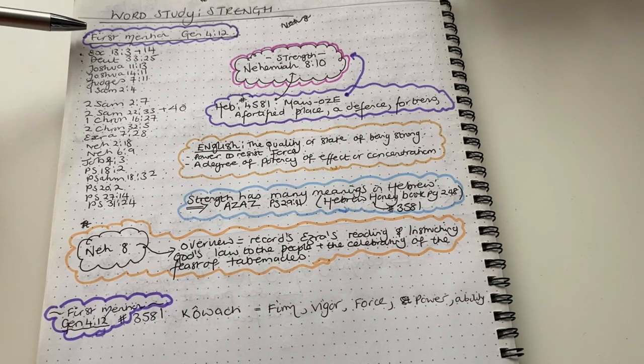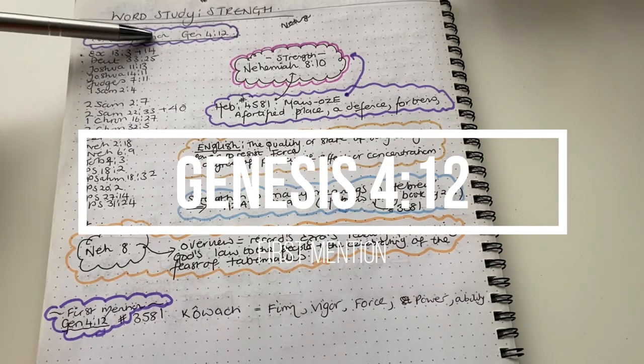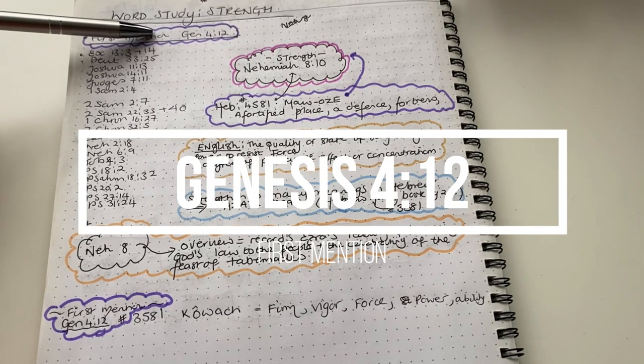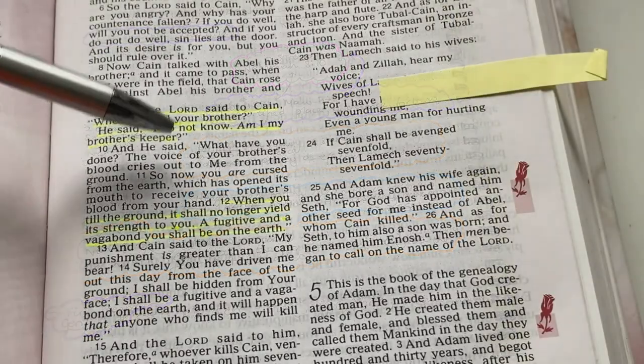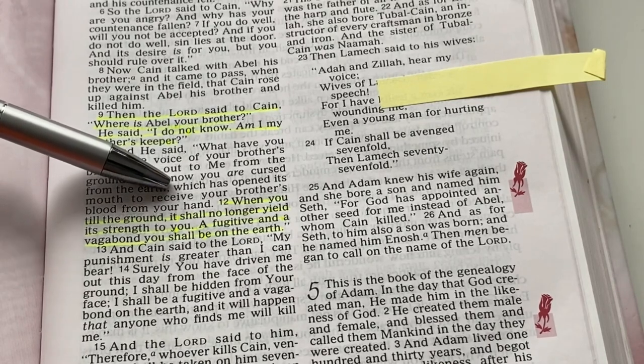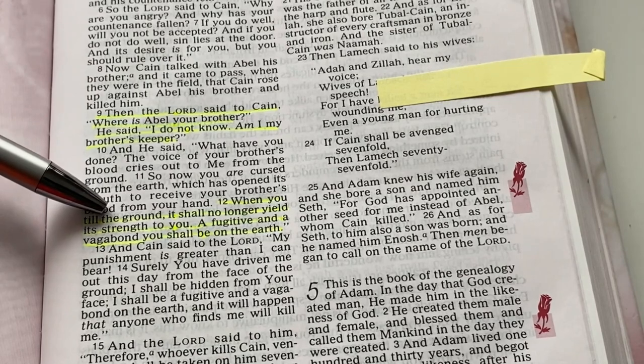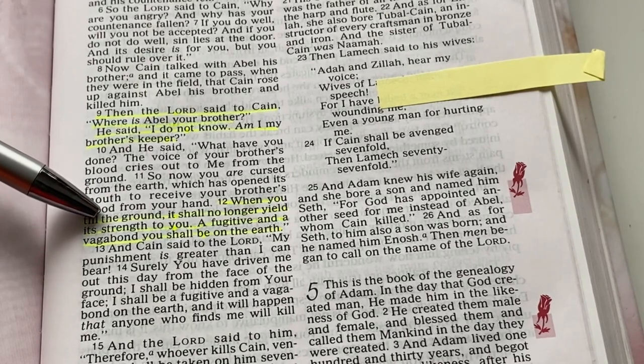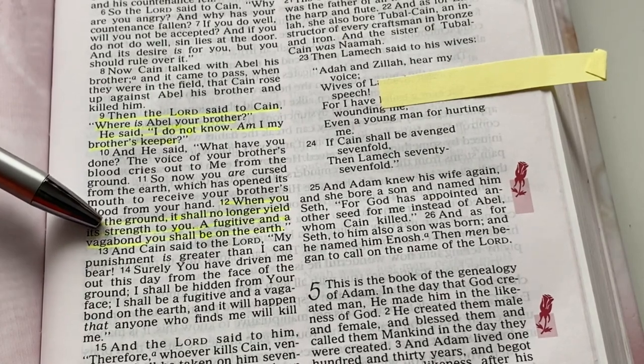So we're going to have a look at Genesis chapter 4 verse 12. I'm using the New King James Version. And it says, when you till the ground, it shall no longer yield its strength to you. A fugitive and a vagabond, you shall be on the earth.